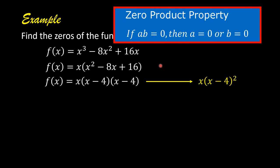Then we apply the zero product property. If AB equals zero, then A equals zero or B equals zero. The factor A equals zero and the second factor B equals zero.